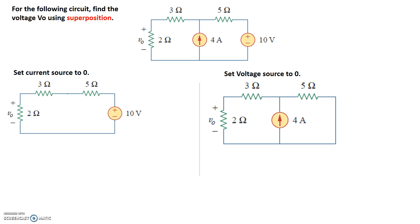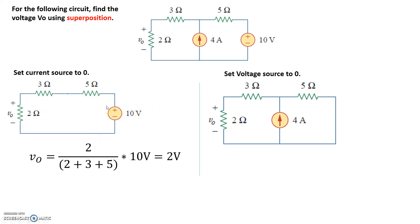We'll independently analyze these two circuits and find the voltage output across the 2 ohm resistor. In the circuit where the current source was set to zero, the 5 ohm, 3 ohm, and 2 ohm resistors are all in series. Since all resistors are in series, voltage divider is an appropriate technique. The voltage across the 2 ohm resistor equals 2 ohms divided by the total series resistance of 10 ohms, times the supply voltage of 10 volts — so V0 equals 2/10 times 10, which gives 2 volts.